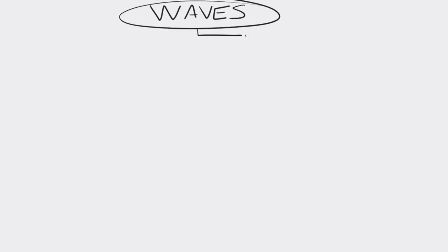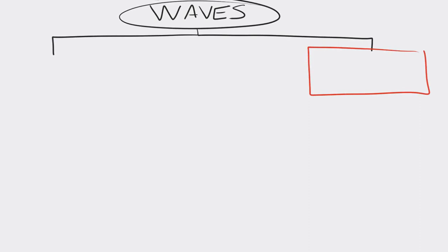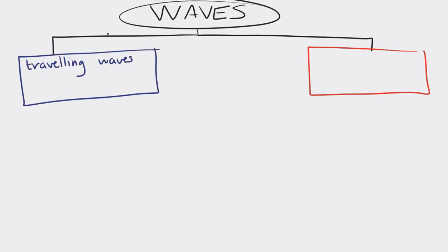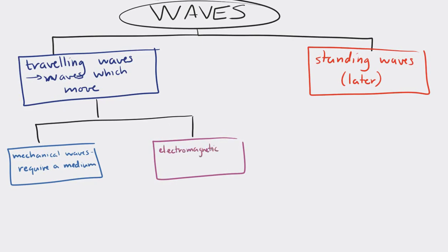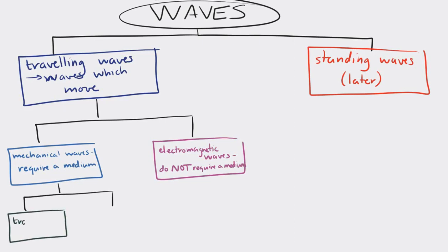There are many different types of waves. Under the big topic of waves, there are two major types: traveling waves and standing waves. Standing waves we will talk about another time. Traveling waves are simply waves which move. And there are two major types of traveling waves: mechanical waves and electromagnetic waves. Mechanical waves require a medium — they have to have some kind of substance which they move through. Electromagnetic waves are a type of wave which do not require a medium at all.